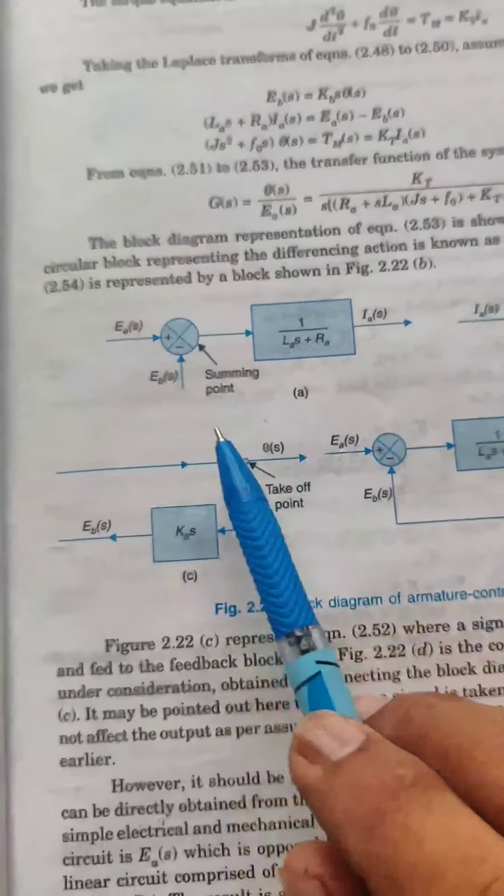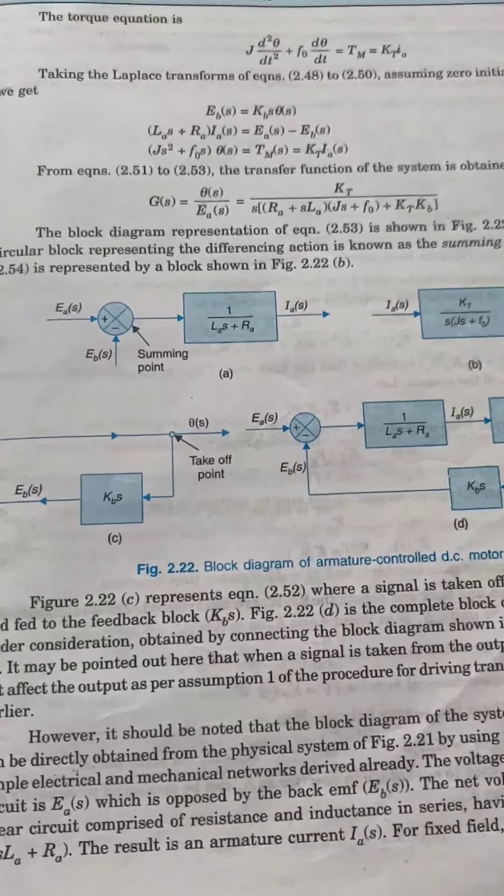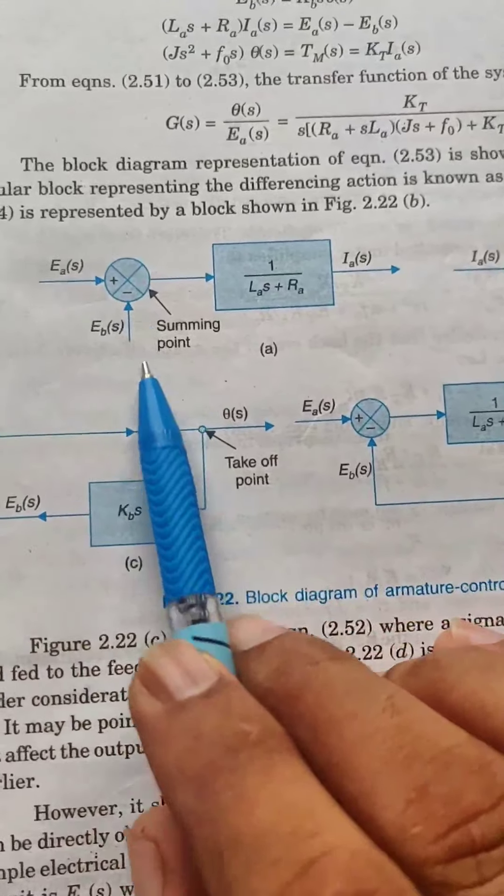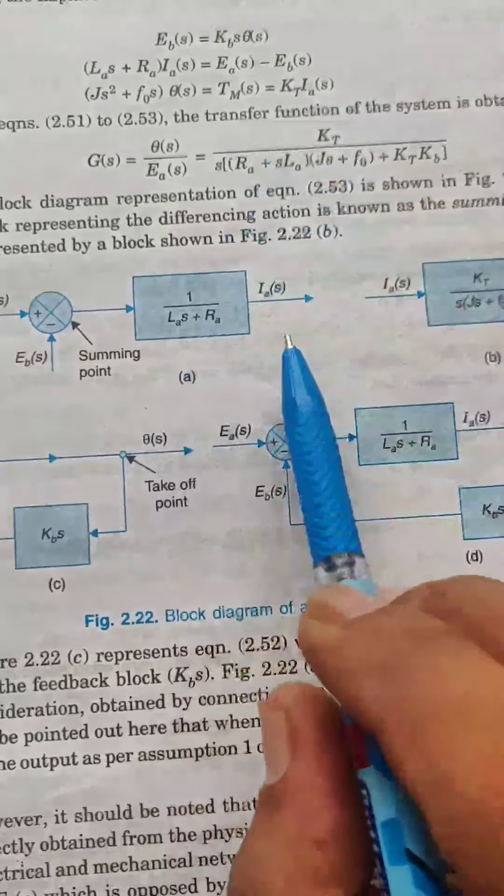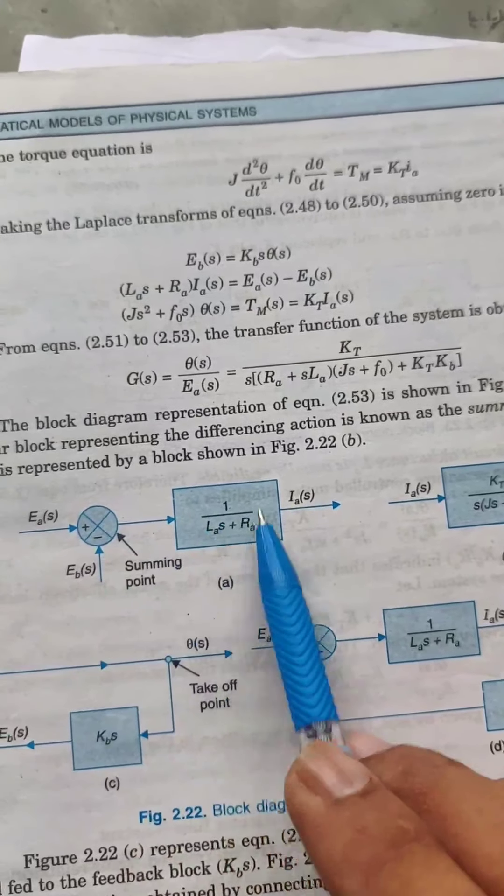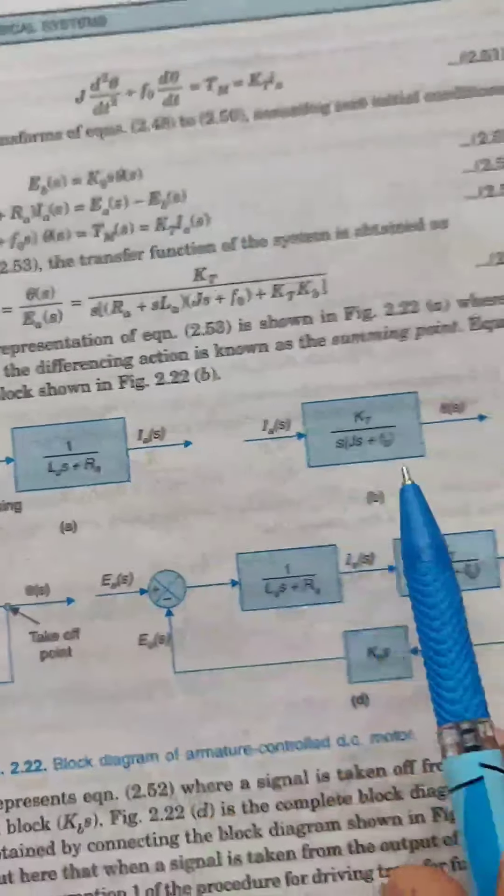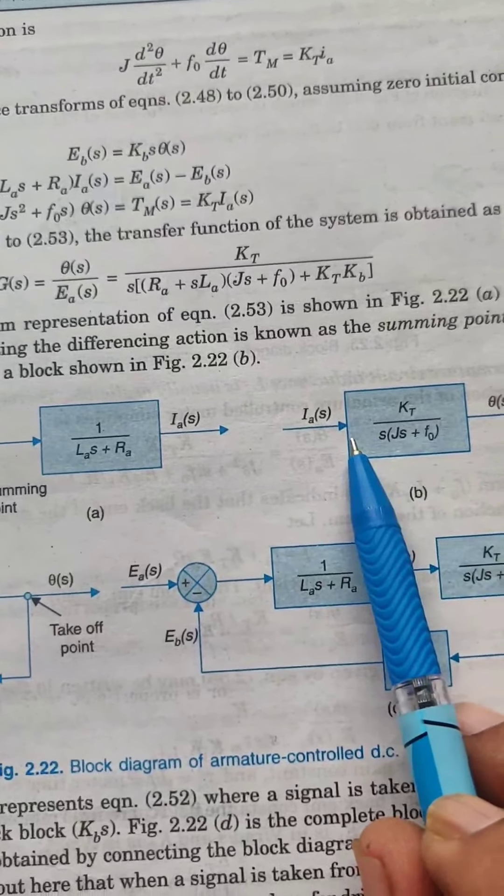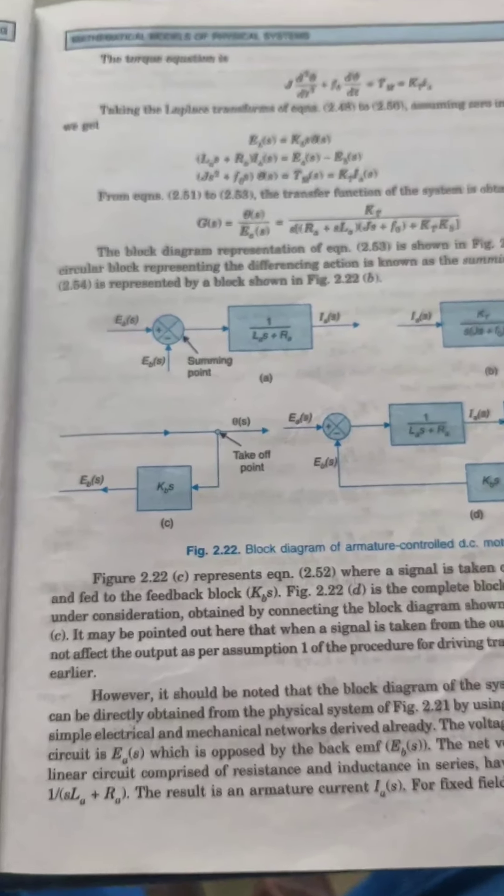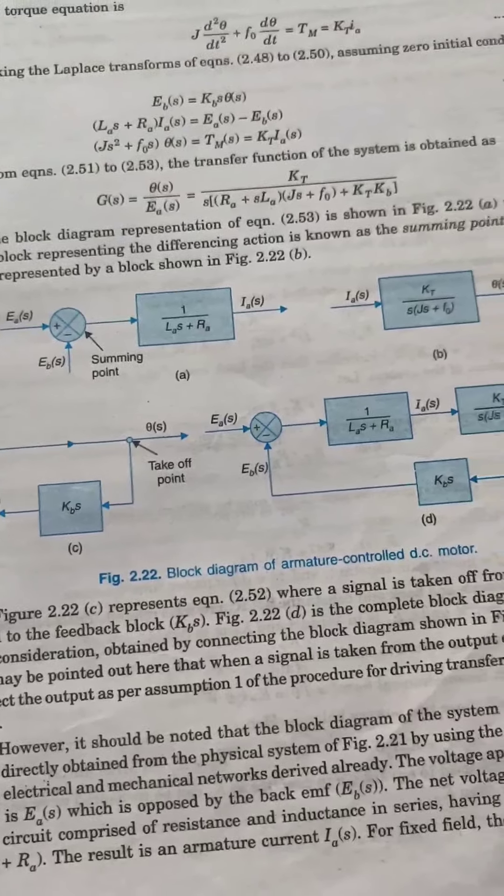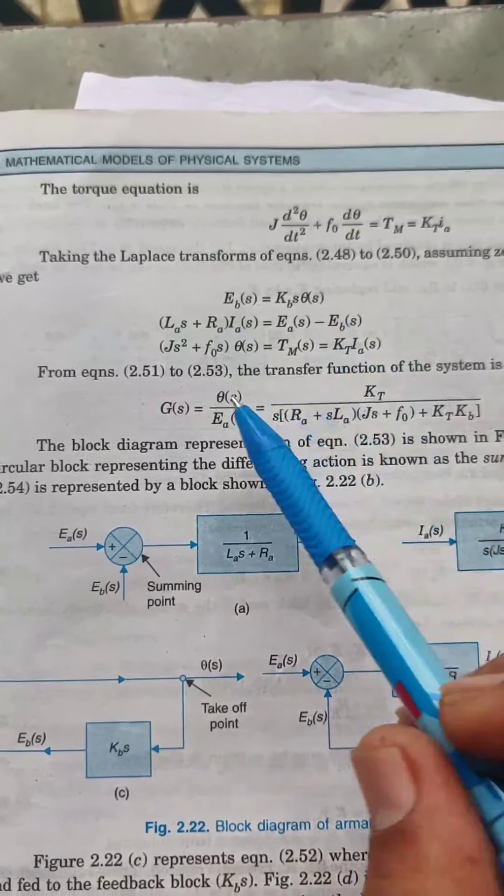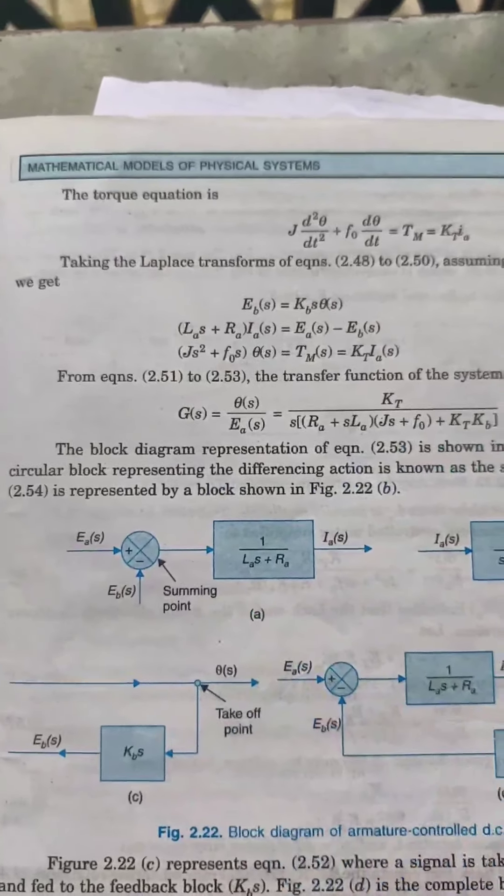This is the transfer function and we can formulate a block diagram also with the help of these three equations. IA equals EA minus EB with the help of this equation. So this IA and theta(s) relation can be used and the complete block diagram can be generated. In this way, DC servo motor's transfer function can be calculated and represented in block diagram also. These three equations are important and by solving these we can find out the transfer function as well as block diagram. Thank you.